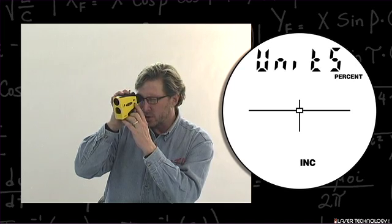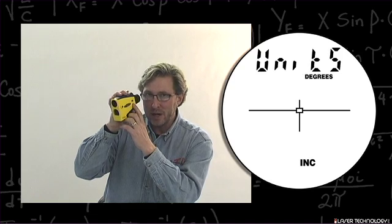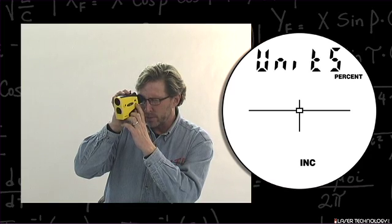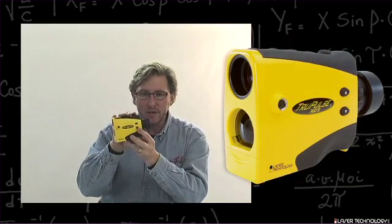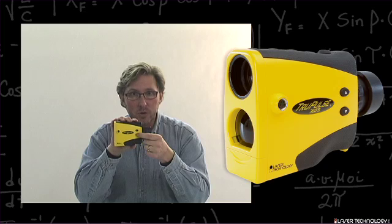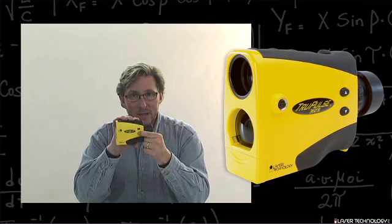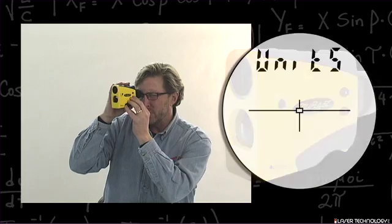The next screen lets you choose between percent or degrees for the inclination of shots you've taken. Choose whichever is appropriate and hit the fire button. Then do a long press on the bottom button for four seconds to return to the system setup.